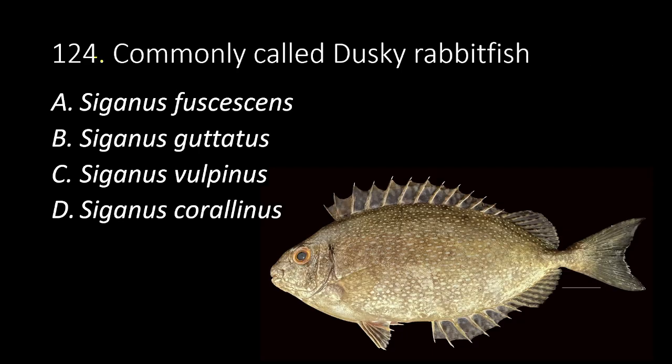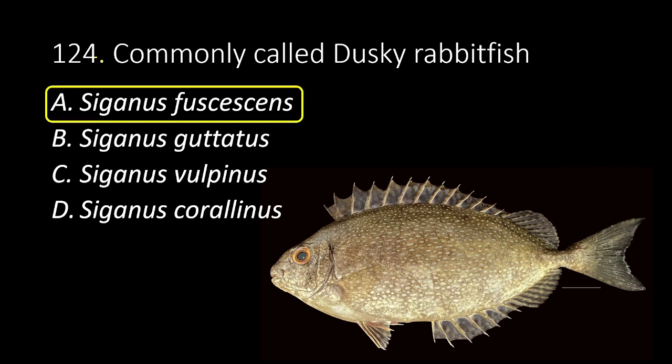124. Commonly called dusky rabbit fish. A. Siganus fuscescens. B. Siganus guttatus. C. Siganus vulpinus. D. Siganus corallinus. The answer is A, Siganus fuscescens.